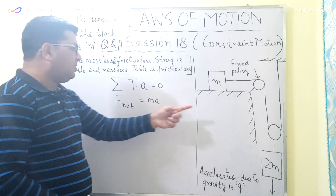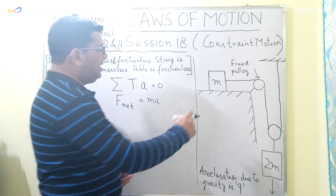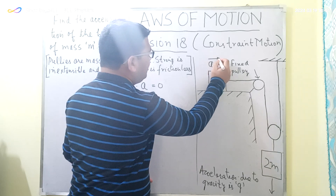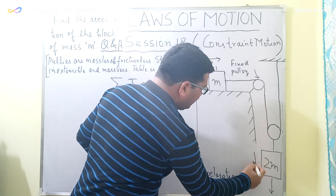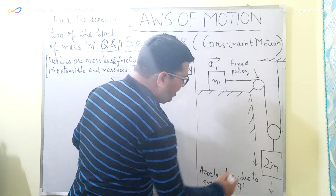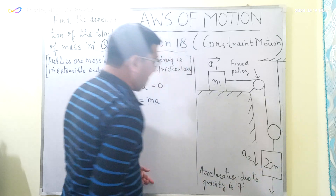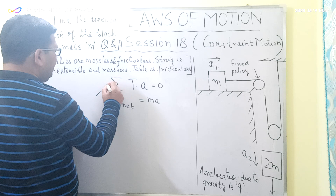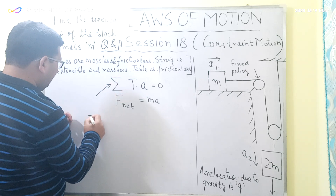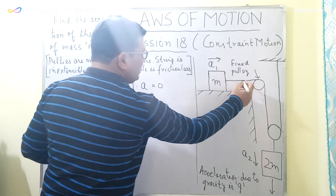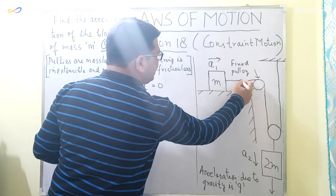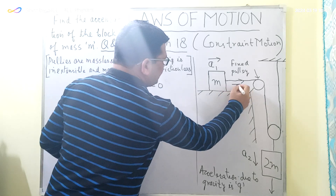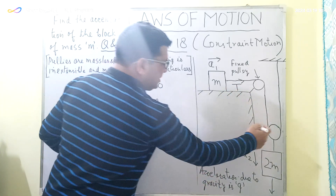Let us consider the acceleration of the block M as A1 and the acceleration of the block of mass 2M as A2. For the block M, the tension in the string is T, and tension always acts away from the body, so the direction of tension is as indicated by the arrow.